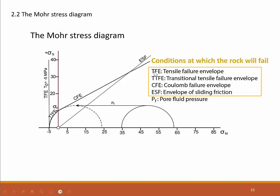Then we have these linear or curving failure envelopes: the tensile failure envelope, the transitional tensile failure envelope, the Coulomb failure envelope, and the envelope of sliding friction. In the previous part of the course we discussed these different failure types as they occur in rocks and along fractures. The tensile failure envelope (TFE) is a vertical line always found in the negative part of the stress diagram, intersecting the normal stress axis on the left-hand side, typically at values of about minus 5 to minus 20 megapascals.